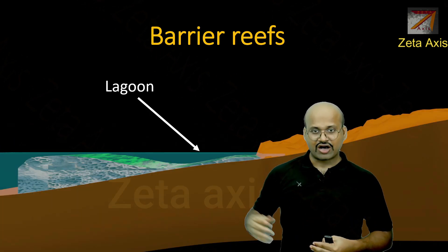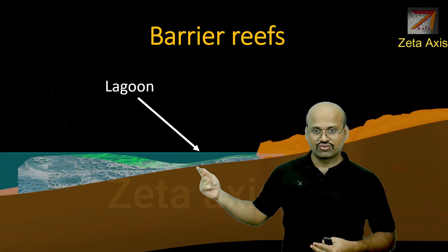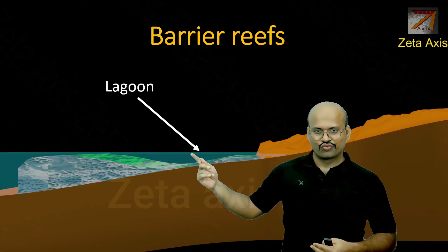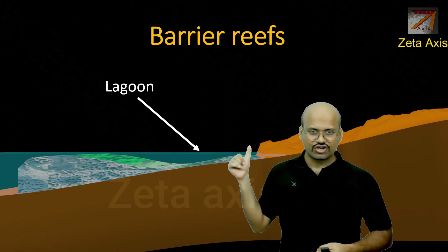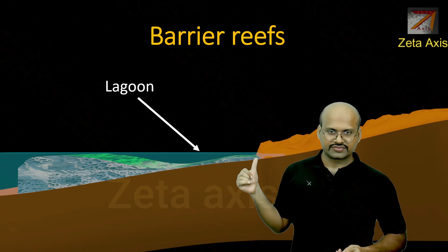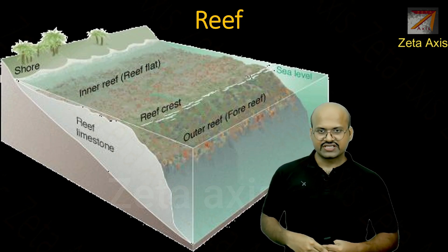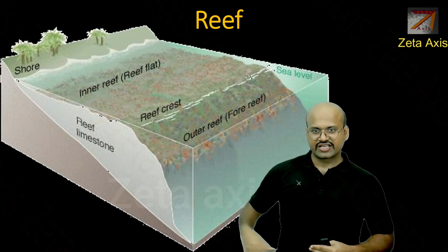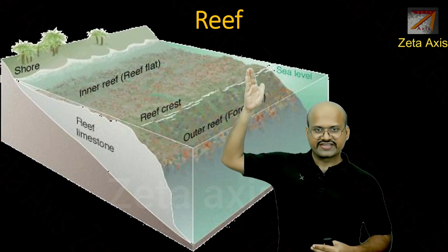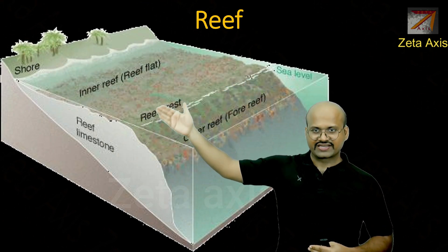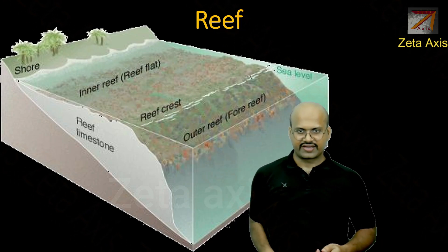Looking at the cross-section of a barrier reef, we can now see a large lagoon which separates the coral reef from the coast. The reef structure shows that the coral reefs are located mostly away from the coastline.